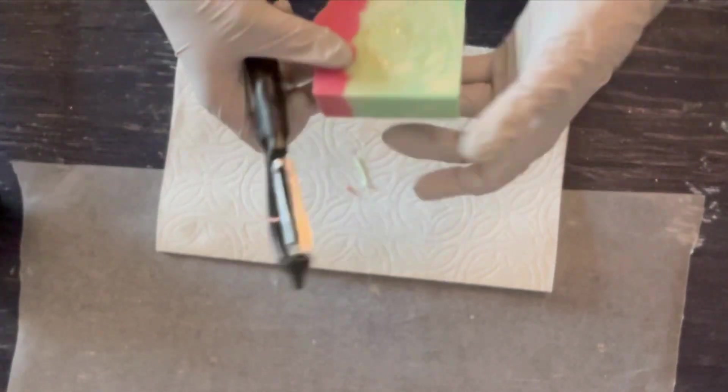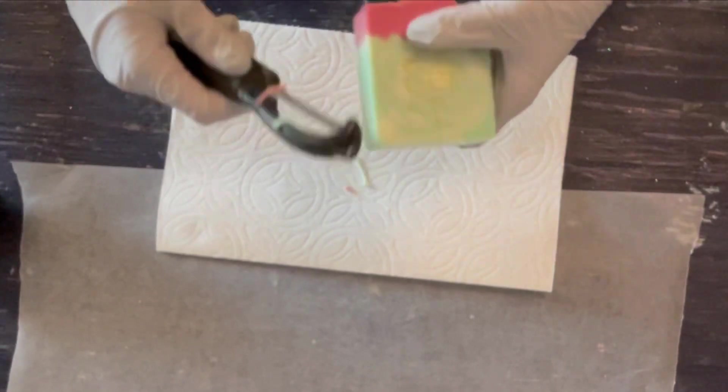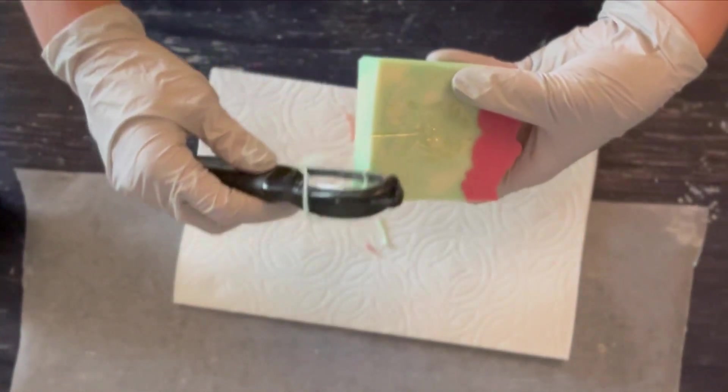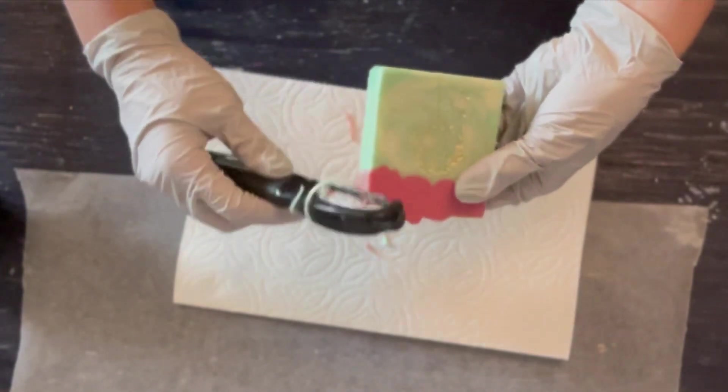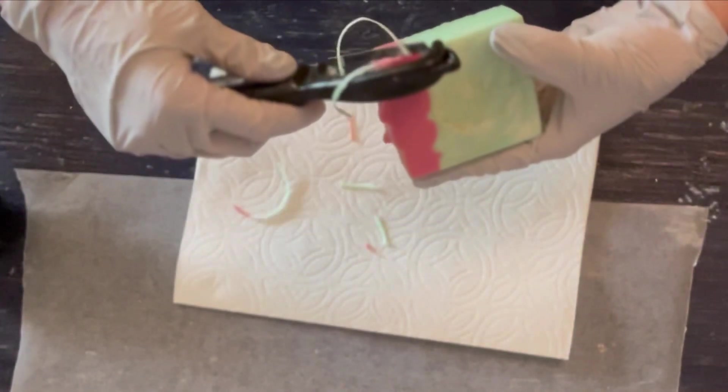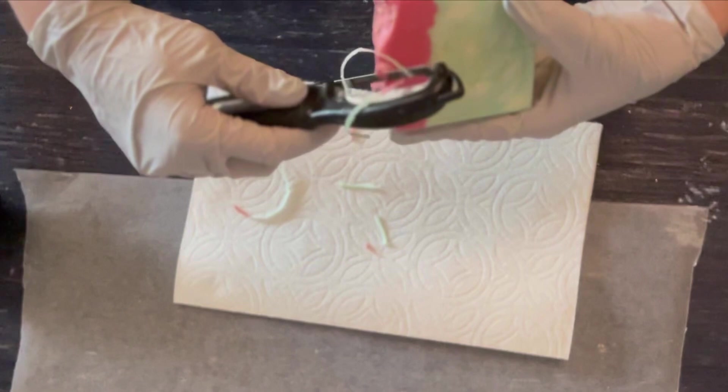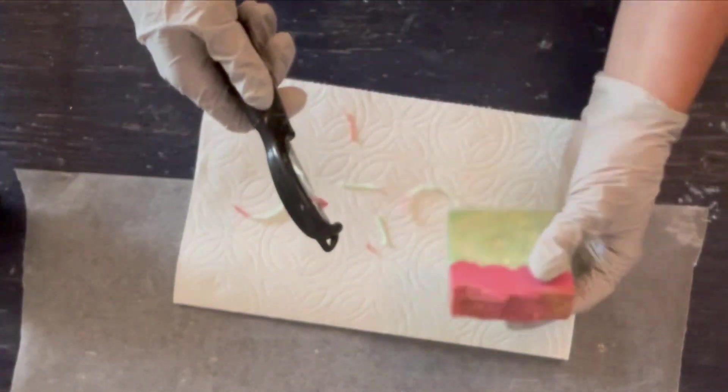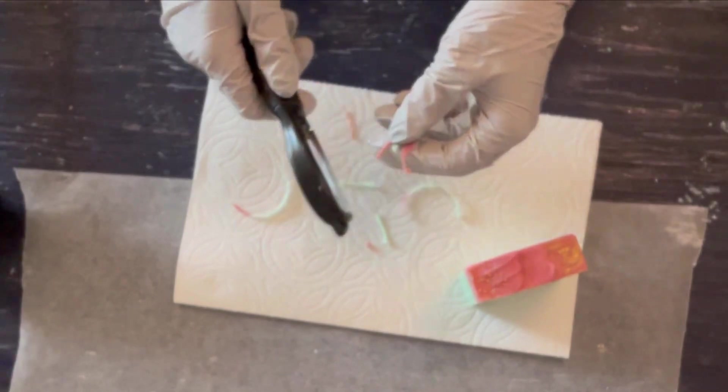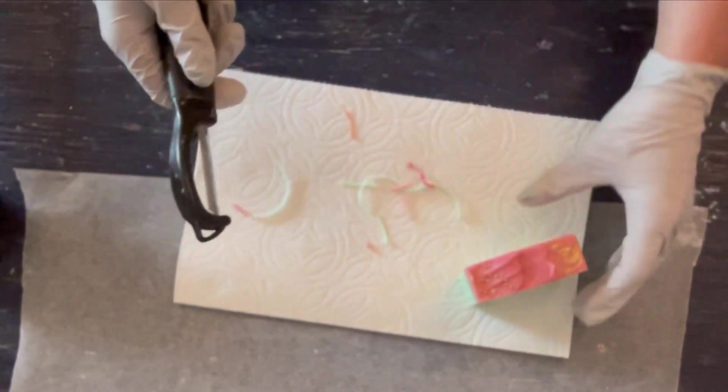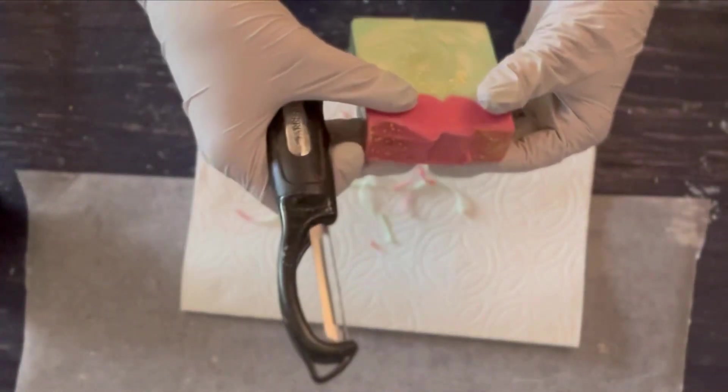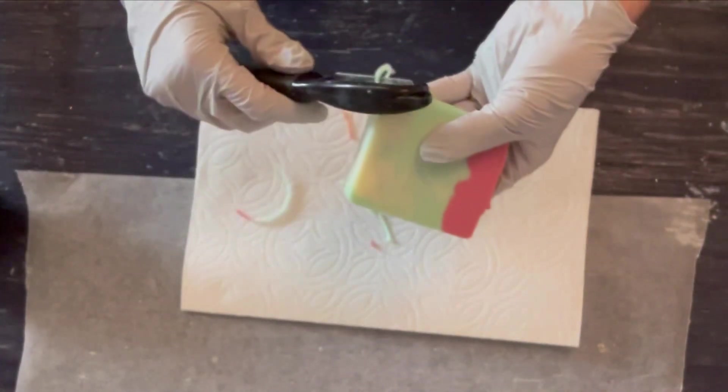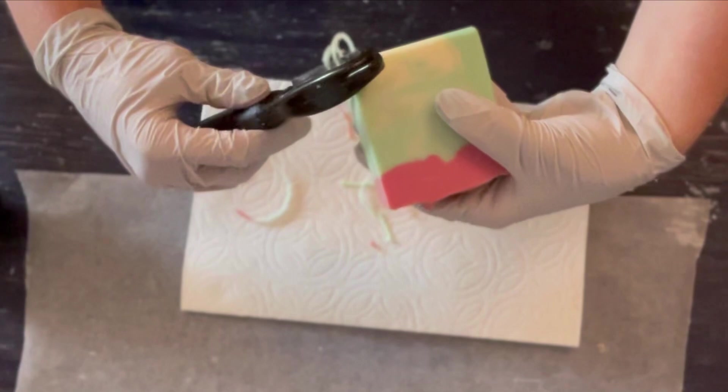In my 100% olive oil soaps, I wait about a week to stamp them because they're just so soft or if I'm trying to get a really intricate design and I use a little bit more water or a little bit more like olive oil or liquid oil, I will wait longer. But these ones I stamped immediately after cutting. And that is typical for me because like I said, my recipe is a lot harder.